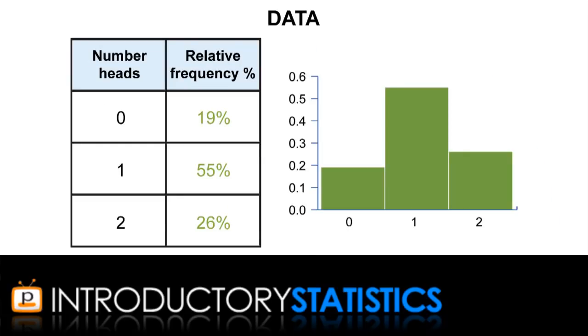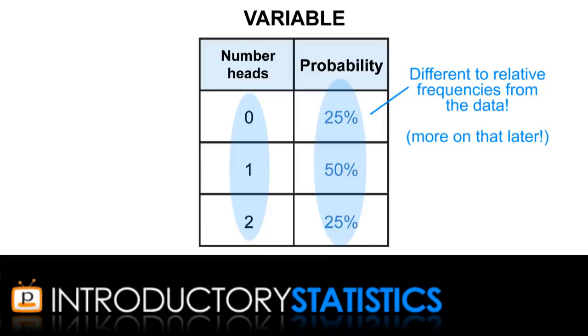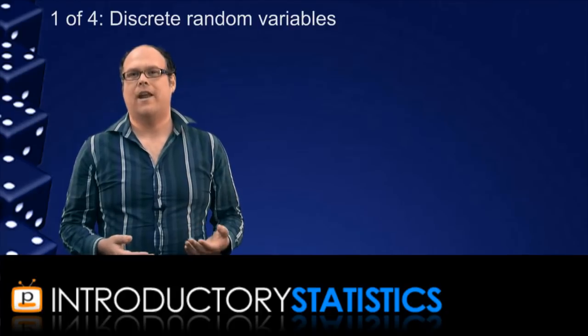But how about we don't collect data, and instead just think about what variable we're looking at here and what values it could take. As I just said, there are three possible values it could take: 0, 1, and 2. And the probabilities of these three values are shown in this table. When we think about what a variable could do instead of what it did, that's when we call it a random variable.